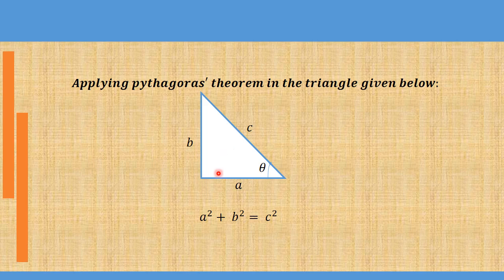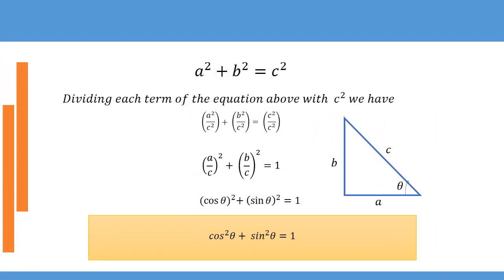Now, first theorem. From the right-angled triangle, we have a relationship that relates the adjacent, the opposite, and the hypotenuse — these are sides of a triangle where the hypotenuse is the longest side. With respect to angle theta, from Pythagoras' theorem, we have a² + b² = c². We shall now look at three trigonometric identities derived from this.